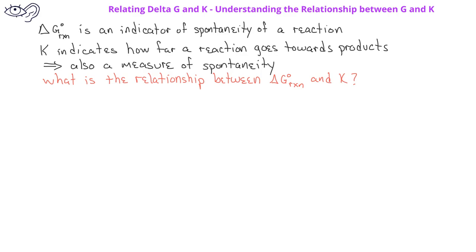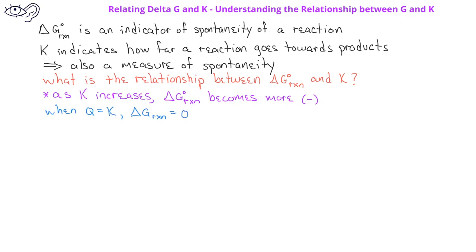In general, as the value of the equilibrium constant increases, the free energy change for the reaction becomes more negative. When the reaction quotient Q is equal to K, the free energy change for a reaction is zero.